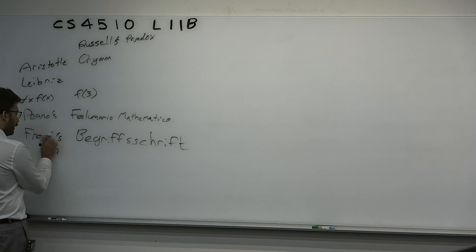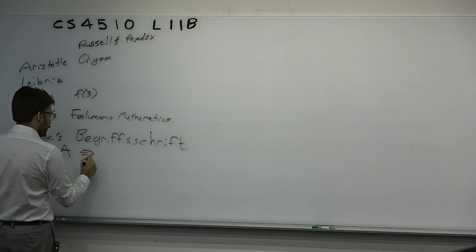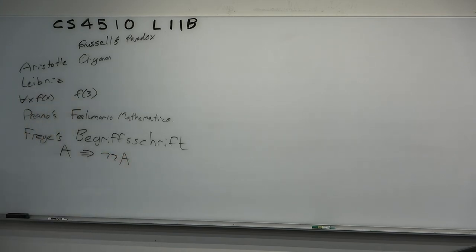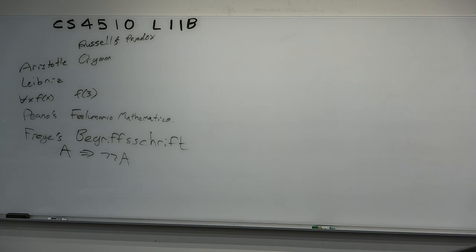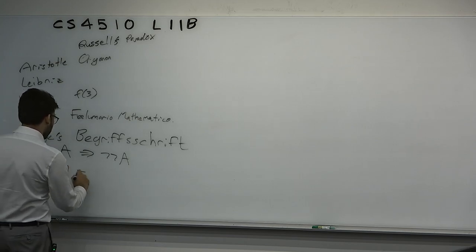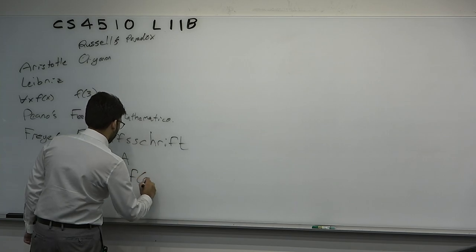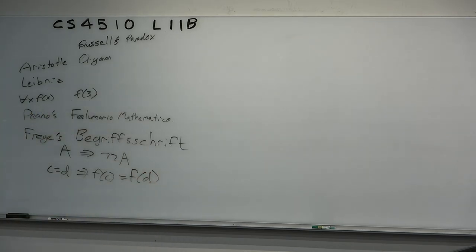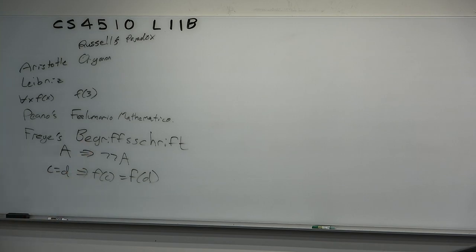Among the axioms we credit to Frege: if A is some statement, then A implies negation-negation of A — a double negation axiom. Notice it's one-directional; you can derive the other direction for free. Another: C equals D implies f(C) equals f(D). C and D represent the same quantity and are therefore interchangeable in all formulas. Another — maybe you've heard of it — is A implies B, and A implies B. The name of what A implies here...